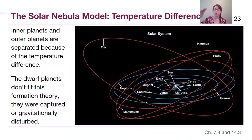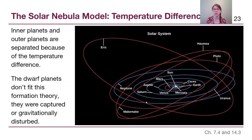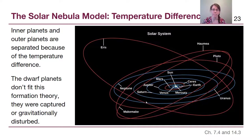Because dwarf planets have weird, tilted orbits, it tells us they probably didn't form with those orbits. They were likely either captured from outside the solar system, or they got too close to each other and were kicked into a more tilted and elongated orbit.